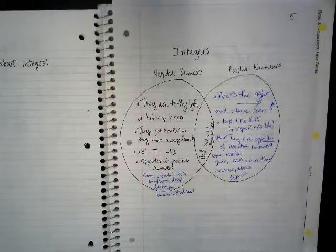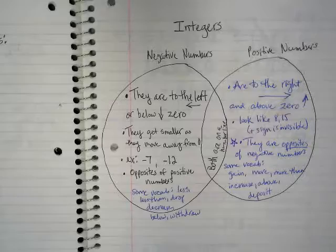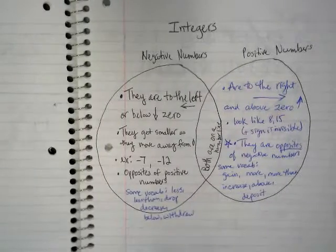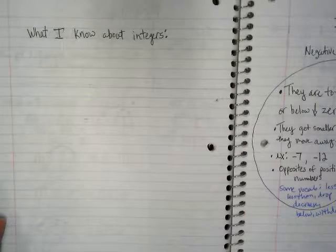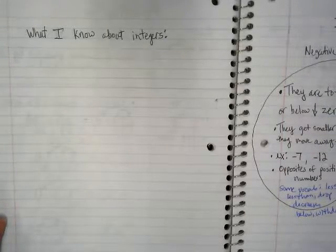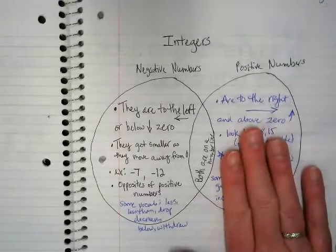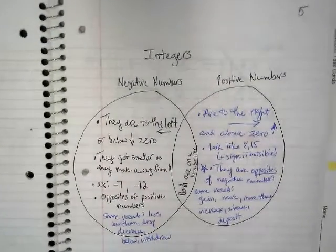On page five we did a Venn diagram about positive and negative numbers which we titled integers. On the left you'll see mine is blank but you should have filled in what you already know about integers. That was after we completed this so you could have used the notes from page five.